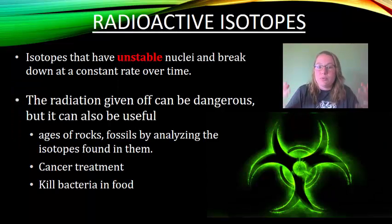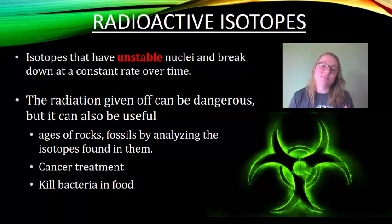Isotopes can be radioactive. Some isotopes have very unstable nuclei, and that nucleus breaks down at a constant rate over time. Radioactivity is super dangerous, but scientists have found a way to harness that radioactivity so it could actually be useful. Scientists are able to determine the age of rocks and fossils by analyzing what isotopes are found in them, which is really fascinating.